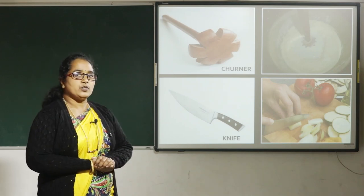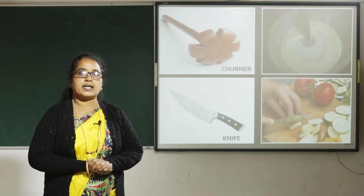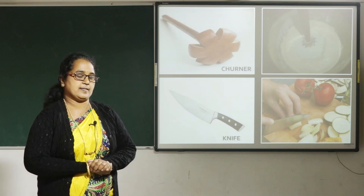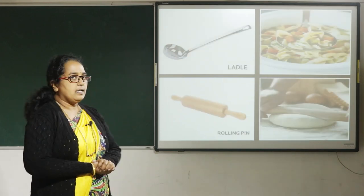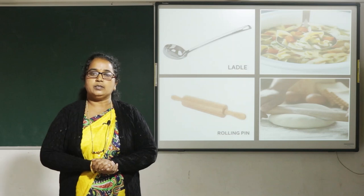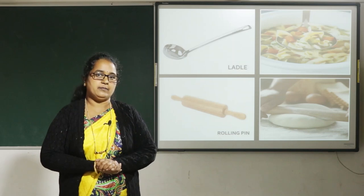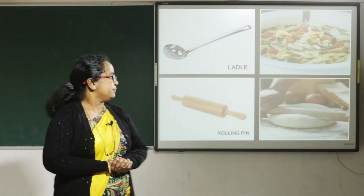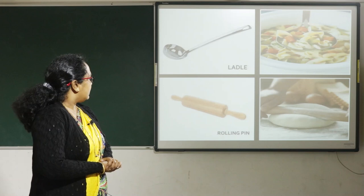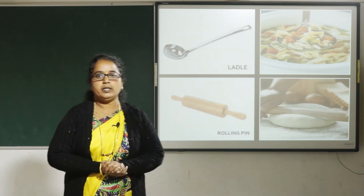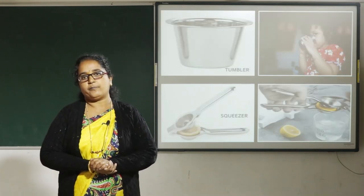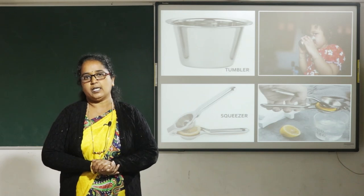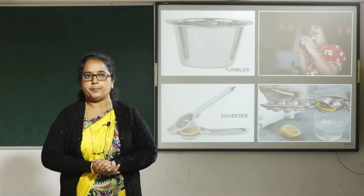Knife. A knife is used for cutting and chopping vegetables. Ladle. A ladle is used to lift liquid out of a pot or other vessels. Rolling pin. A rolling pin is used to shape and flatten dough to make chapati or puri.